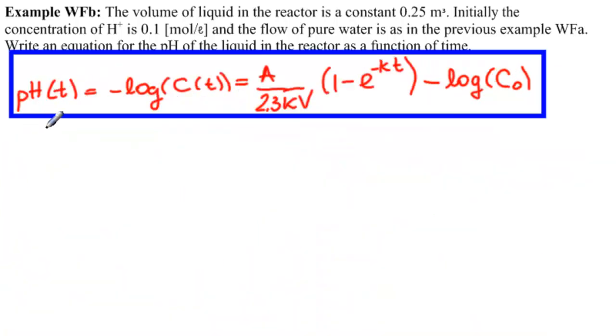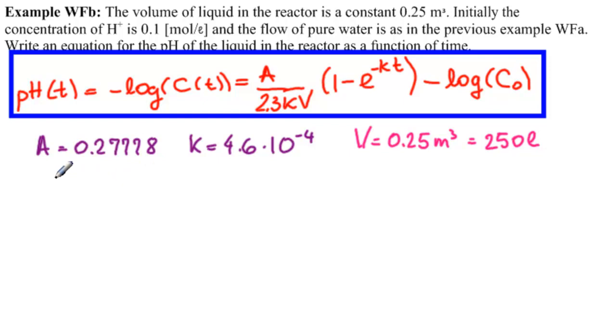So now finally we want to substitute into this equation the particular values. If you recall, we had A equal to 0.27778. We had K equals to 4.6 times 10 to the minus 4th. We have, as we can see from here, V equals 0.25 meters cubed. Everything is in liters in seconds. So this is equal to 250 liters. And finally we have C0 is equal to 0.1 mole per liter.